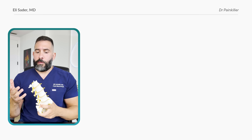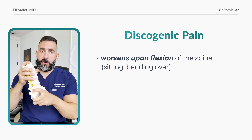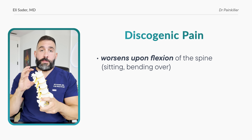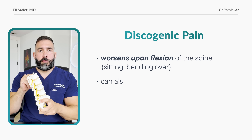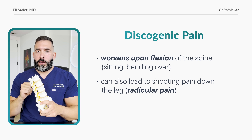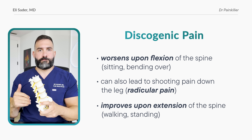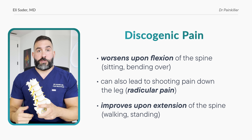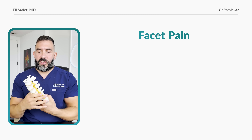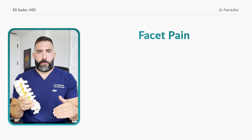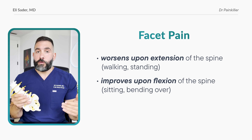To summarize: discogenic pain tends to worsen upon flexion of the spine — sitting or bending over. It can be in the back itself if it's only the disc, or if nerve roots are involved it can shoot down the legs. This kind of pain usually improves with extension, so walking or standing can potentially make it better. Facet pain is the opposite pattern — it worsens when standing or walking and improves when sitting.